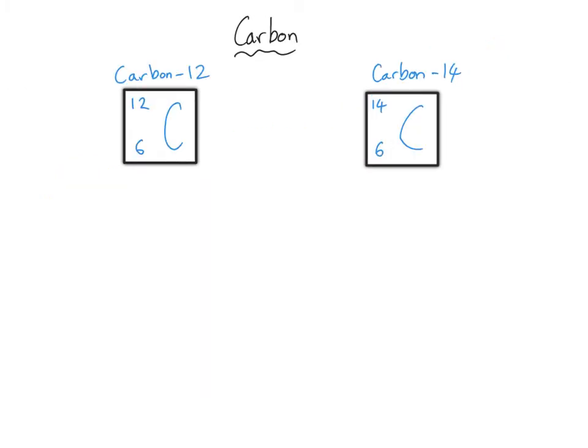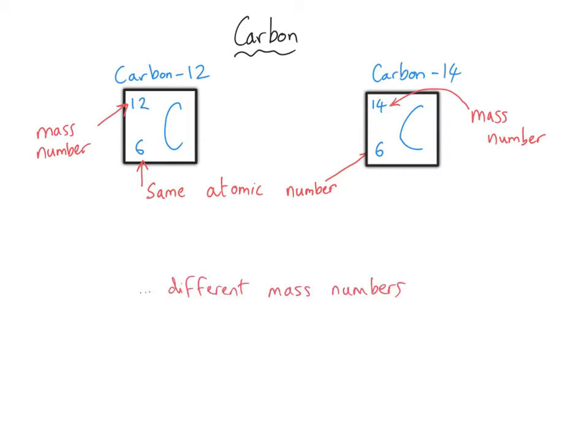Sometimes a test question will ask you to compare and contrast two isotopes of the same element. So they might say here are two isotopes of carbon — explain how they are similar and different. Now there are two ways to do this. The first way is to take it very literally, and to use your periodic table that you get given in a test, and to say that these elements have got the same atomic number, six. Whereas they have got different mass numbers — 12 for carbon-12 on the left-hand side, and 14 for carbon-14 on the right-hand side.